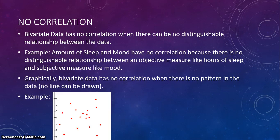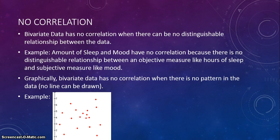No correlation: bivariate data has no correlation when there is no distinguishable relationship between the data. For example, amount of sleep and your mood have no correlation because there's no distinguishable relationship between an objective measure like hours of sleep and a subjective measure like mood. Graphically, there's no pattern in the data and no line can be drawn — the dots are everywhere.